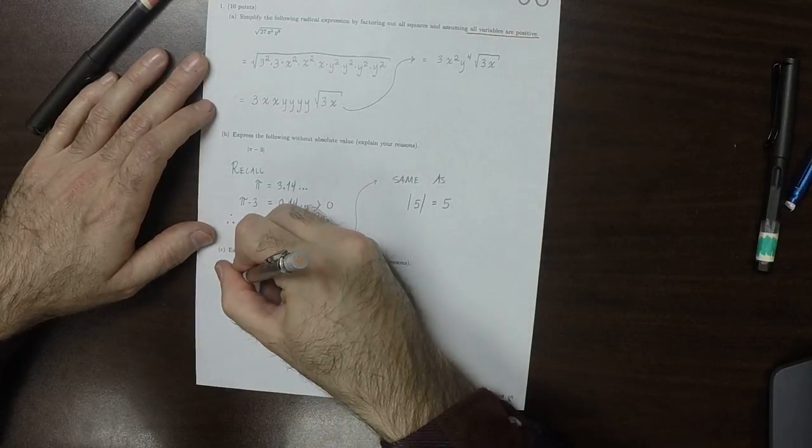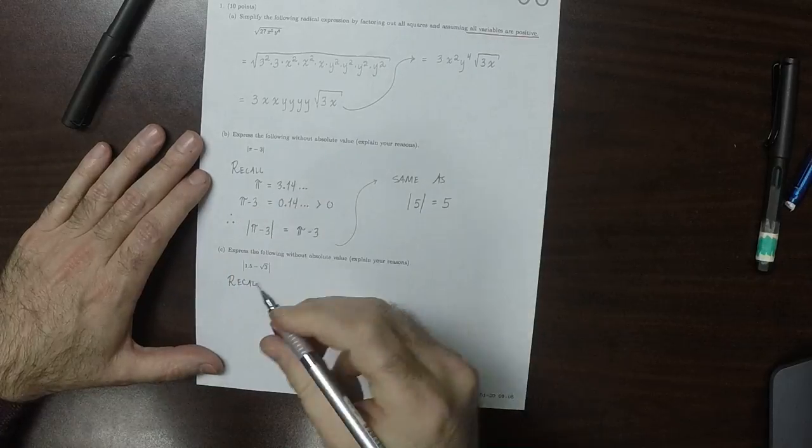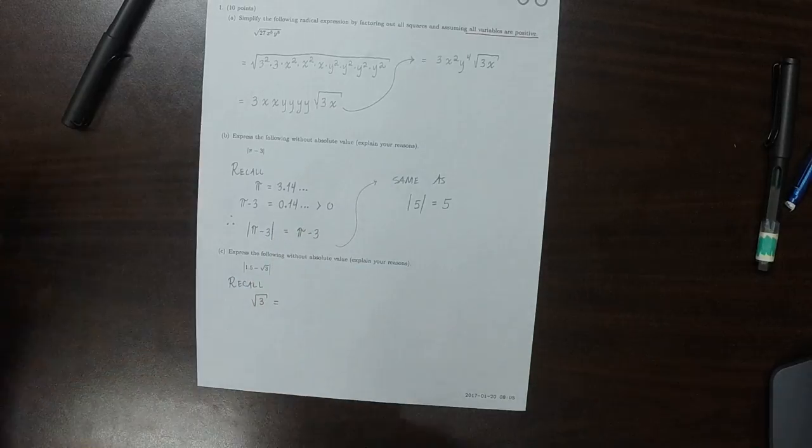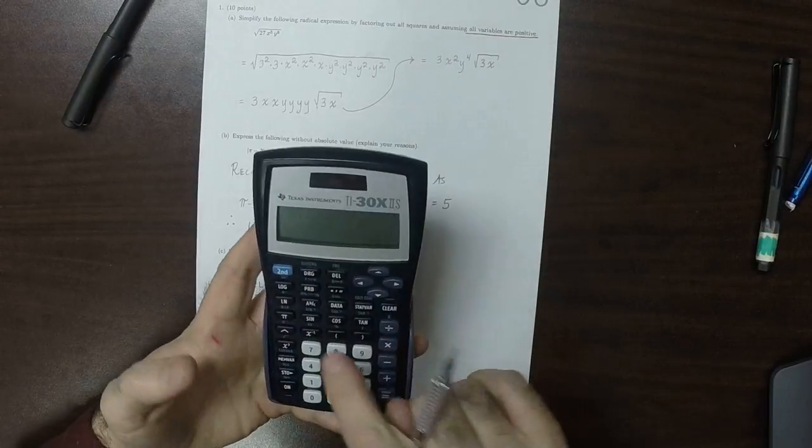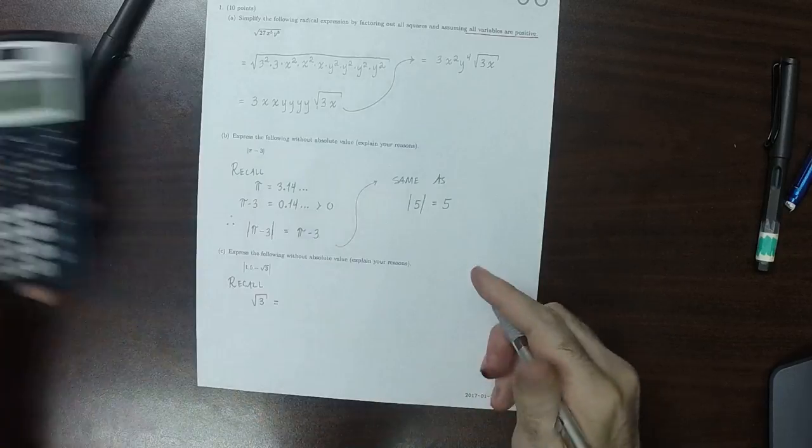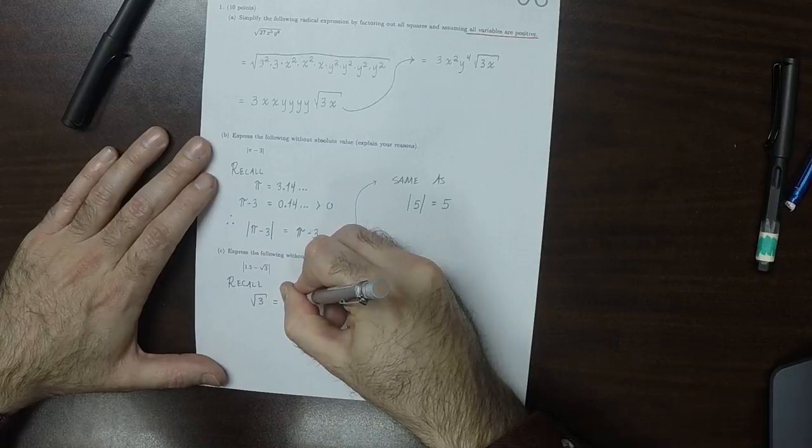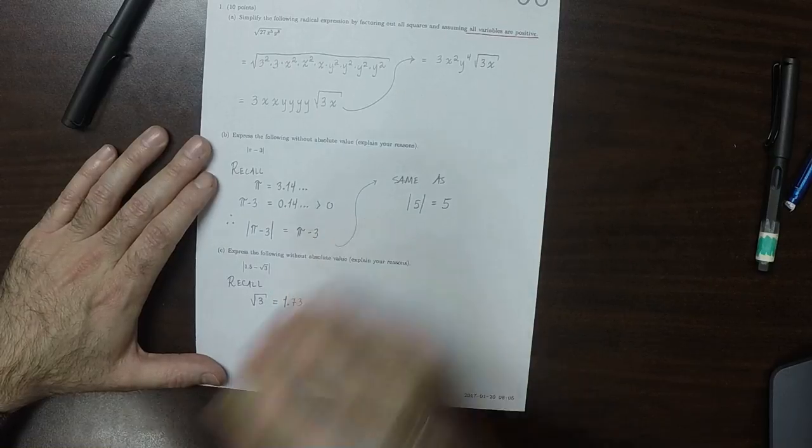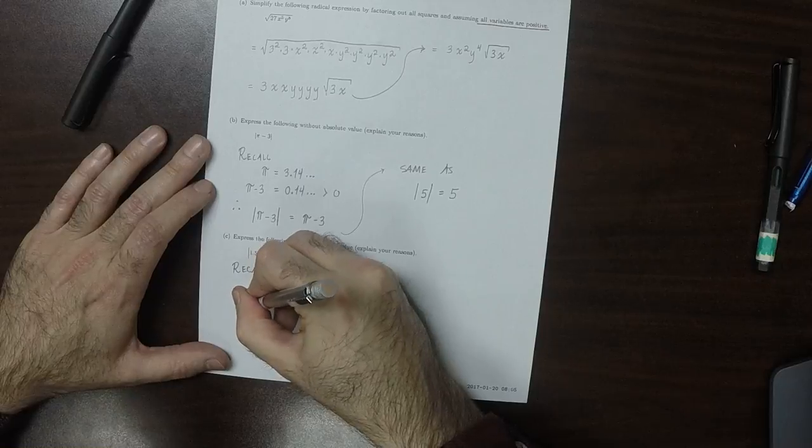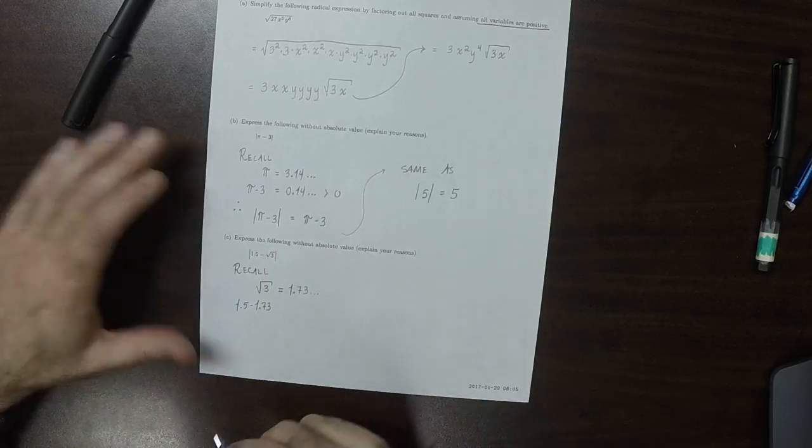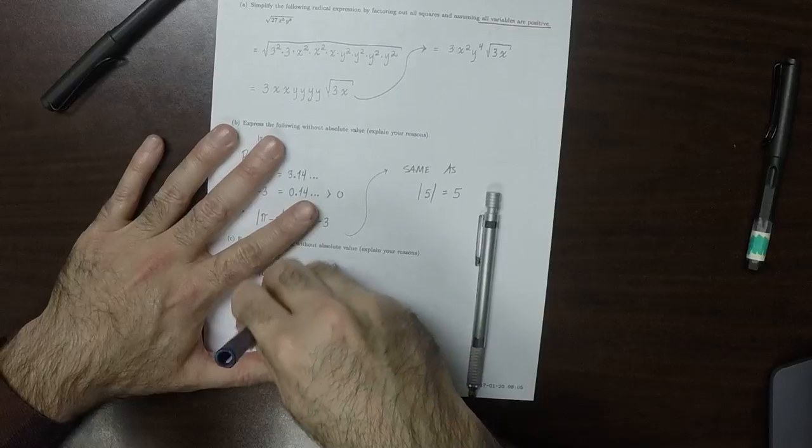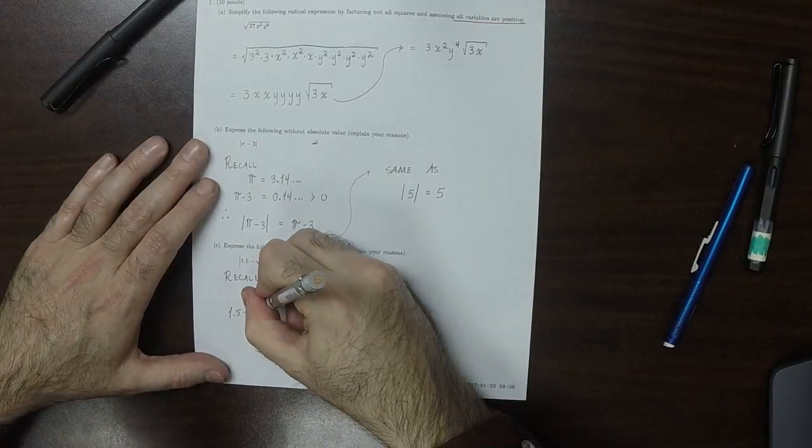For part c, we need to recall the square root of 3. So let's get the calculator. So square root of 3, about 1.73. 1.73 dot dot dot. So then, 1.5 minus 1.73 dot dot dot. Let's just make that square root of 3, to be clear. Minus square root of 3.